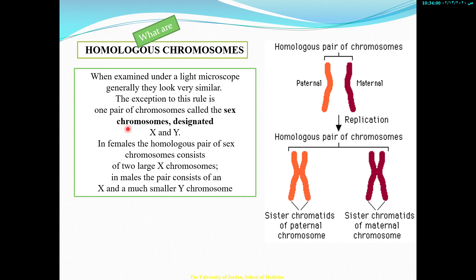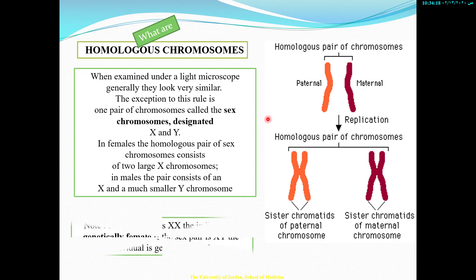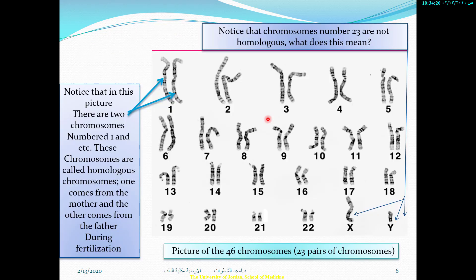In females, the homologous pair of sex chromosomes consists of two large X chromosomes. In males, the pair consists of an X and a much smaller Y chromosome. I'll take you to the next slide, then come back to talk about the definition of homologous chromosomes.